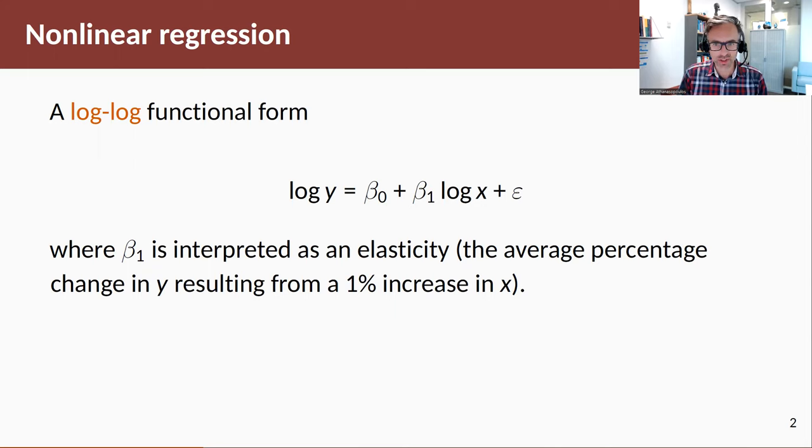The most obvious and commonly used nonlinearity is to use an alternative functional form for a regression model. The way this is achieved is by taking logs of your y variable and logs of your predictor, giving you a log-log functional form. If you take this type of functional form, then your β₁ coefficient is no longer a marginal effect but can be interpreted as an elasticity—the average percentage change in y resulting from a 1% increase in x.